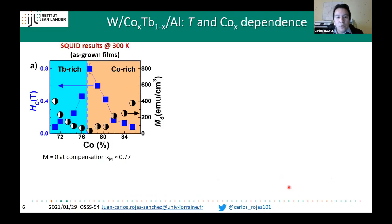Another way to probe the compensation point is to change the cobalt concentration. Our SQUID measurements around 300 K show that at a cobalt fraction of about 0.77, the net magnetization goes to zero while the coercive field diverges—typical behavior of these ferrimagnetic alloys.